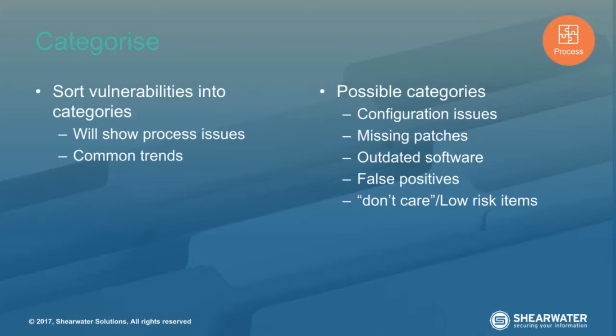The other category is don't-care or low-risk items. Every environment has these and they'll be different for every organisation. For example, there's a vulnerability for ICMP timestamp issues - those of you that run vulnerability scans will know this one. It's firmly in the 'we should probably fix it at some stage, but we've got bigger fish to fry' category. These are the low-risk, fix-later items. Categorisation shows you process issues and common trends or things that are going to go wrong within the organisation.